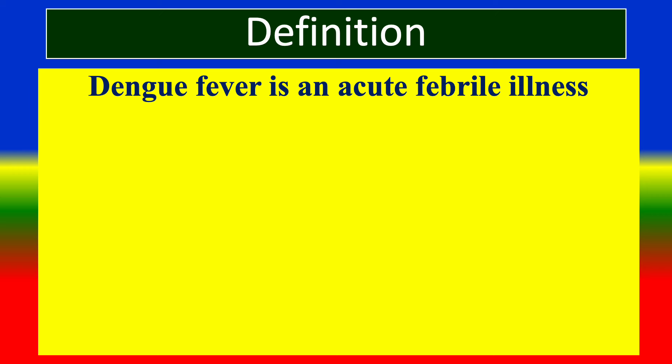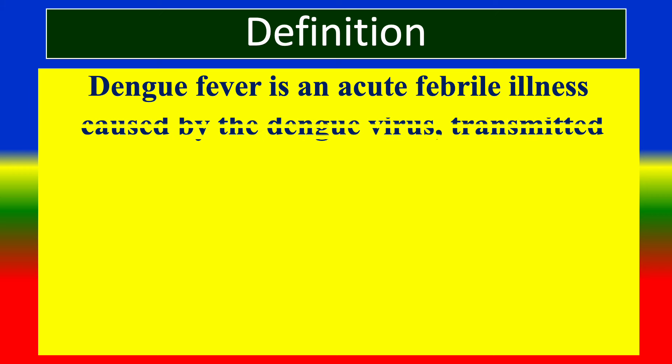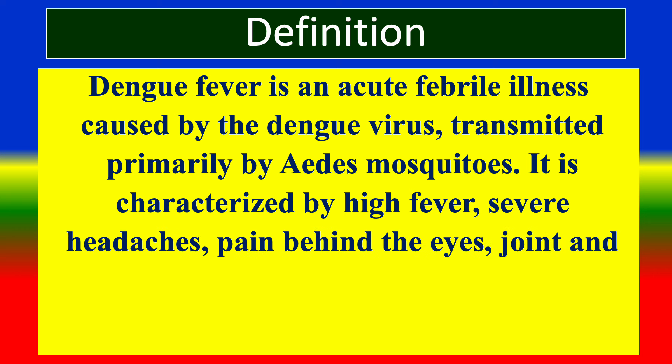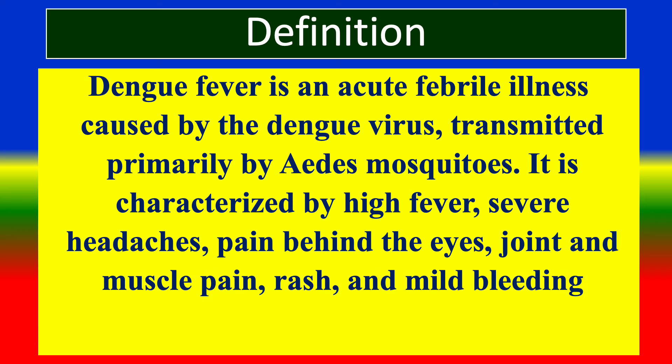Definition. Dengue fever is an acute febrile illness caused by the dengue virus, transmitted primarily by Aedes mosquitoes. It is characterized by high fever, severe headache, pain behind the eyes, joint and muscle pain, rash, and mild bleeding.